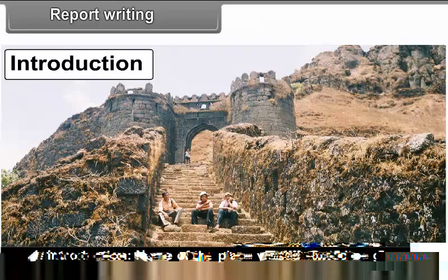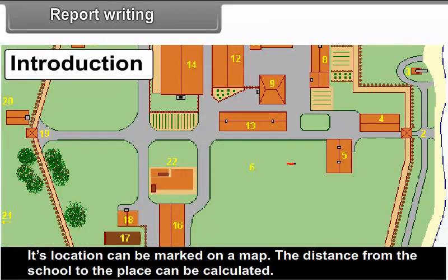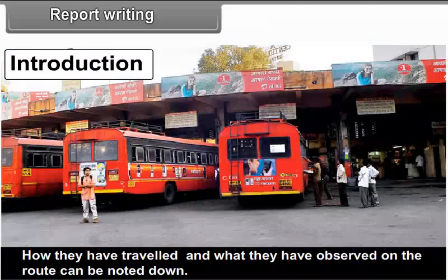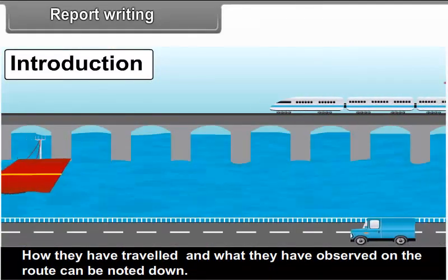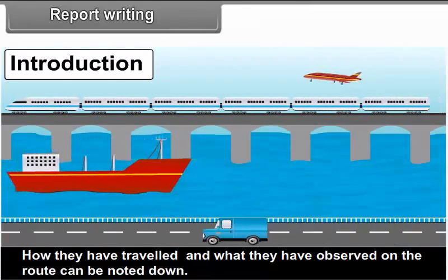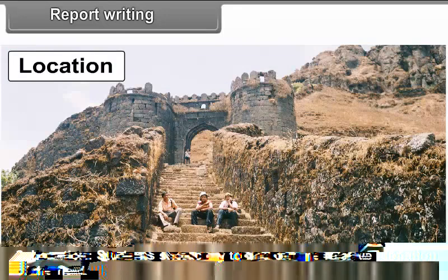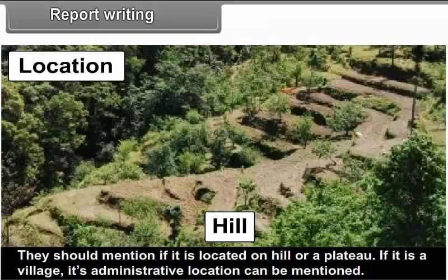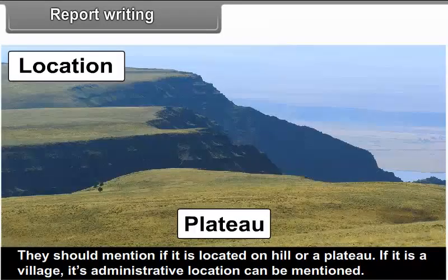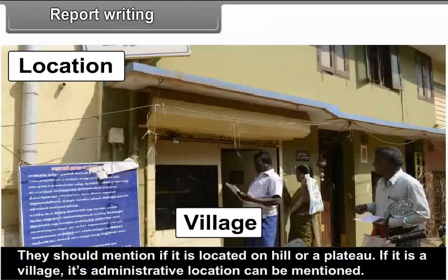1. Introduction: The name of the place visited should be given, and its location can be marked on a map. The distance from the school to the place can be calculated, and how they traveled and what they observed on the route can be noted. 2. Location: Students should find out the relative location of the field — whether it is on a hill or a plateau. If it is a village, its administrative location can be mentioned.